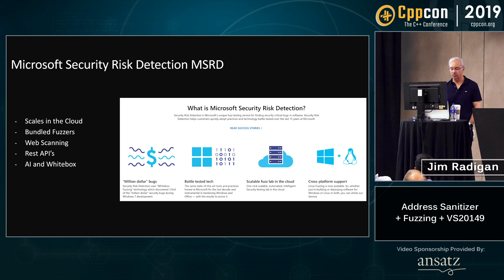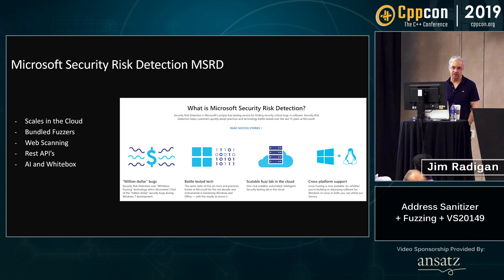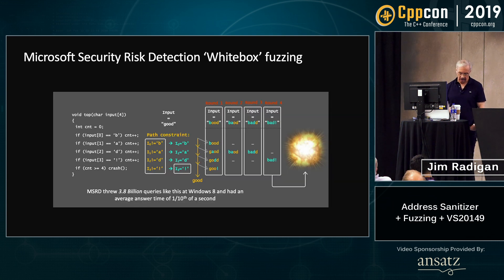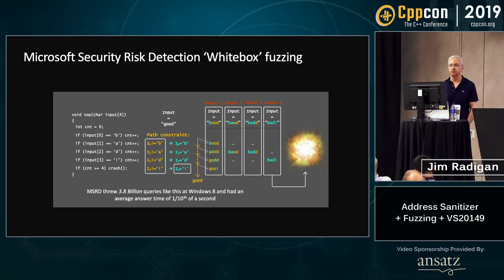What is a fuzzing service? At Microsoft it's called the Microsoft Security Risk Detection Service. It scales in the cloud, bundles a tremendous number of fuzzers, does web scanning, fuzzes RESTful APIs, and has applications of AI and white box fuzzing. One interesting thing is we combine technologies from time travel debugging — where you can actually record the execution and go back in time in the debugger — and those traces are being used to help with fuzzing.